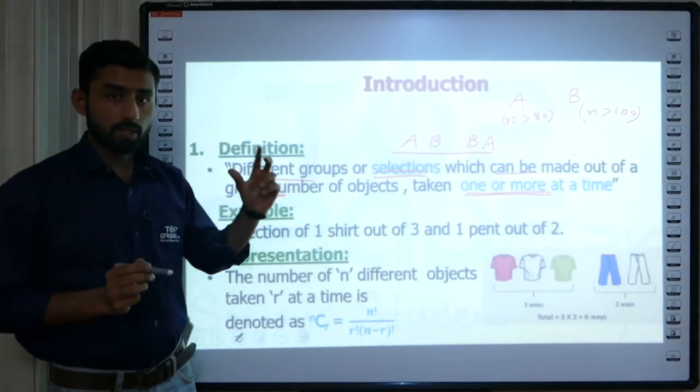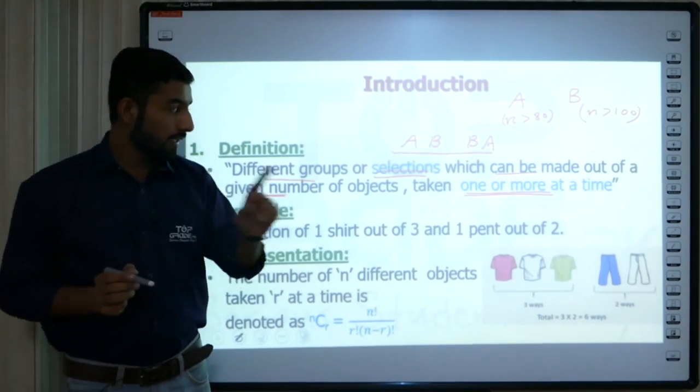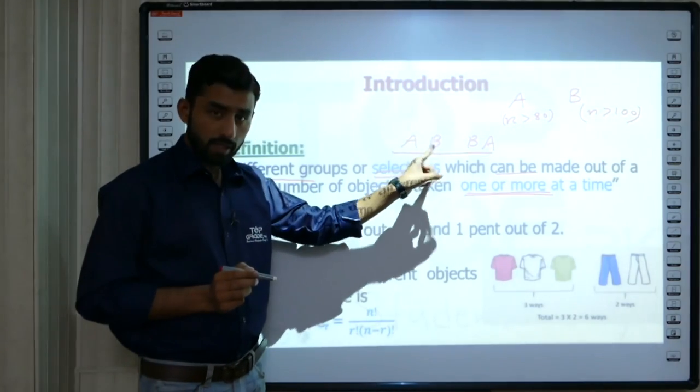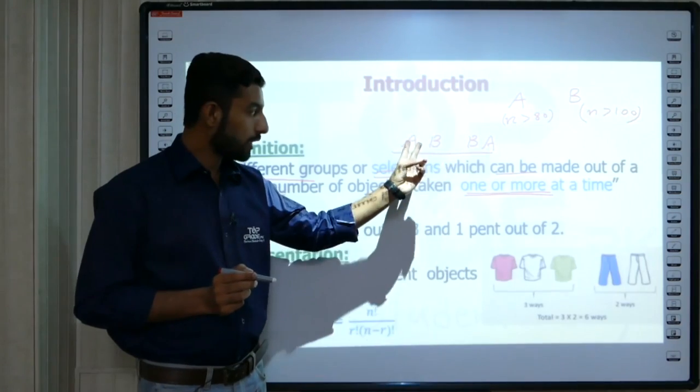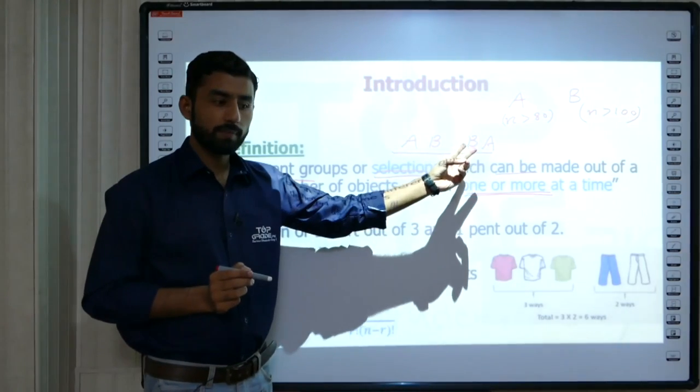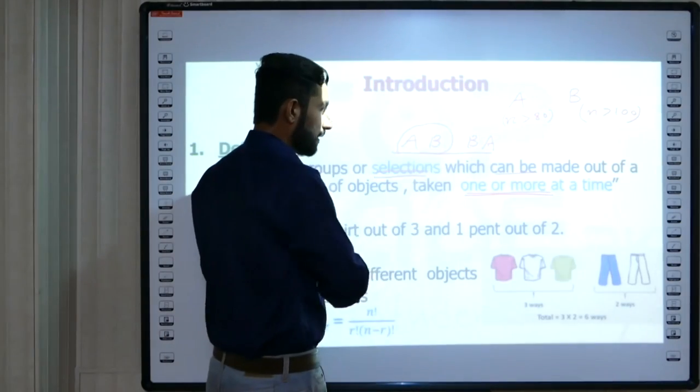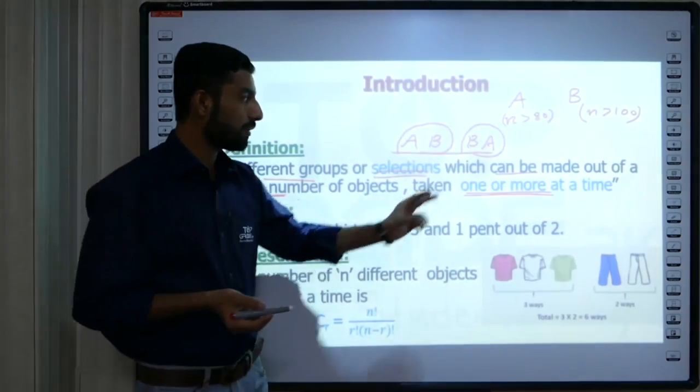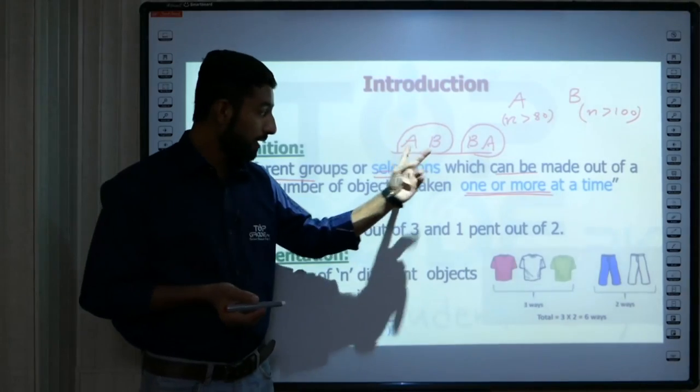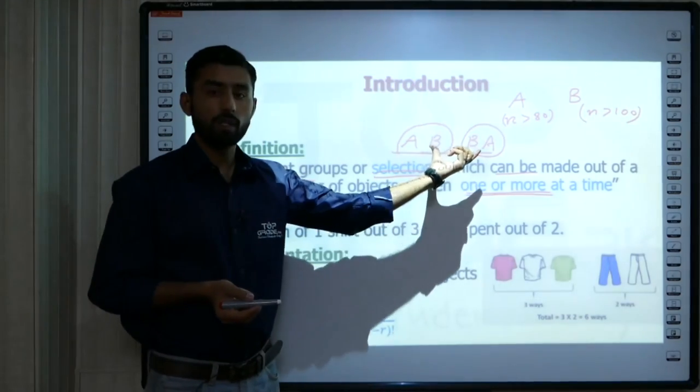We're going to see what the combination is and those properties. Are they both different or the same? If both properties are same, then we'll see what the same combination is. A and B are similar; we've got an order change. We've got a combination to see properties in this situation.